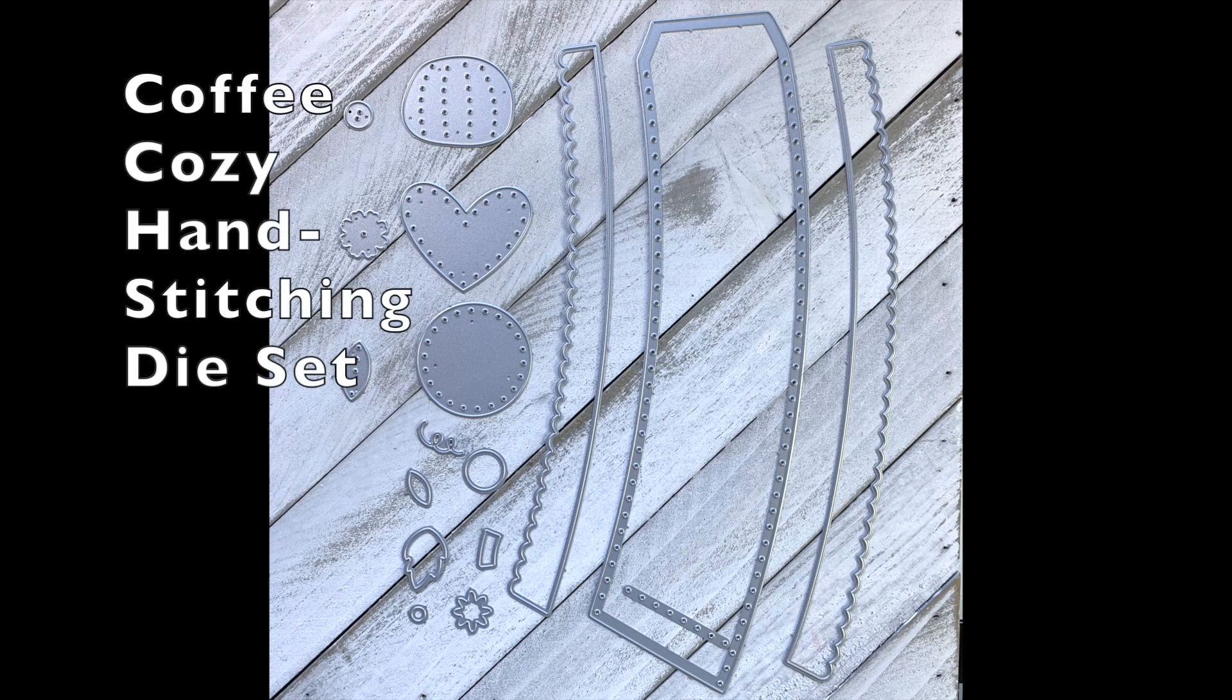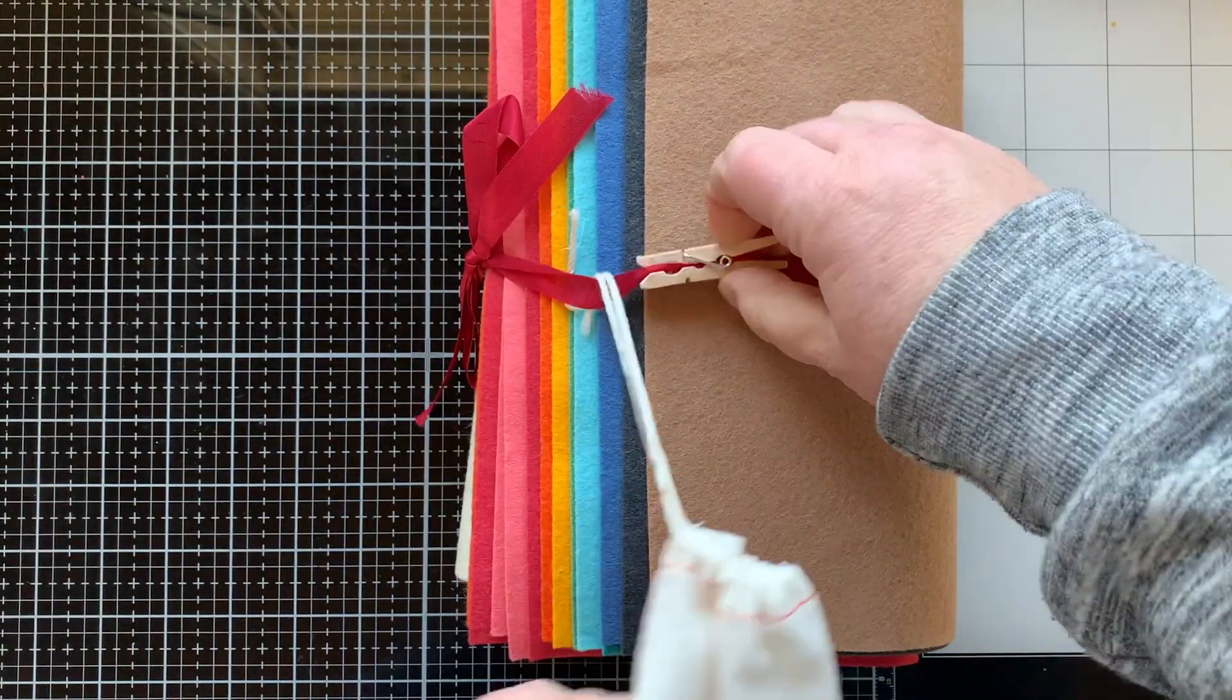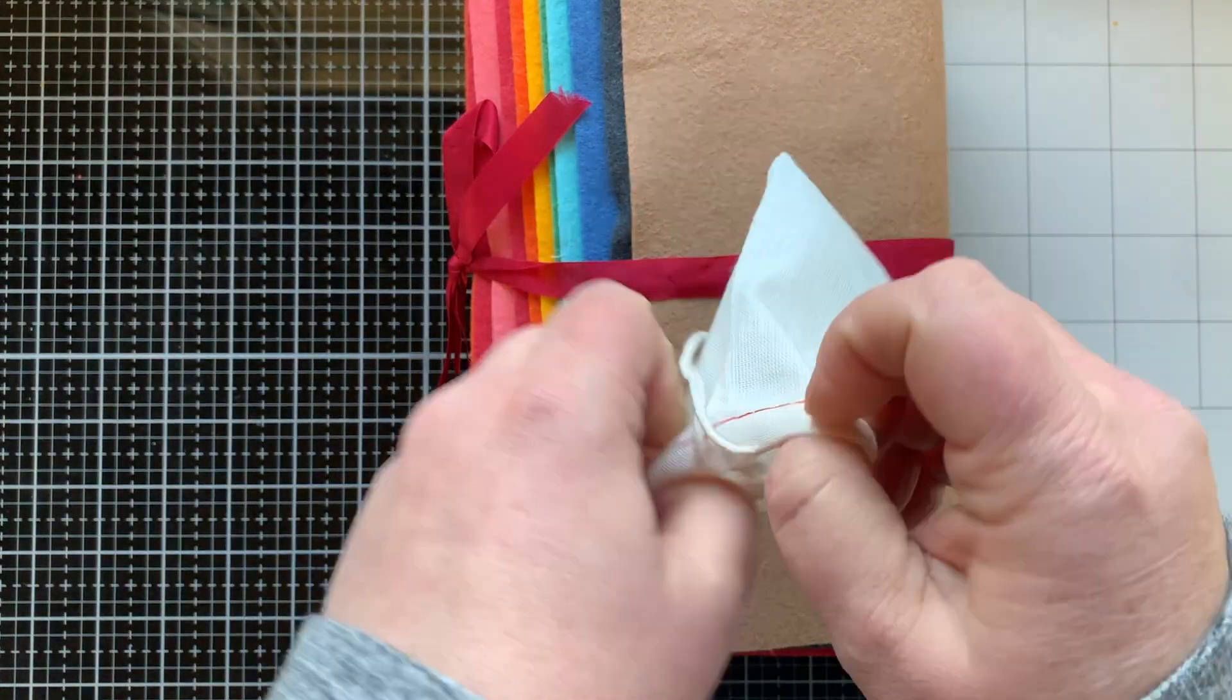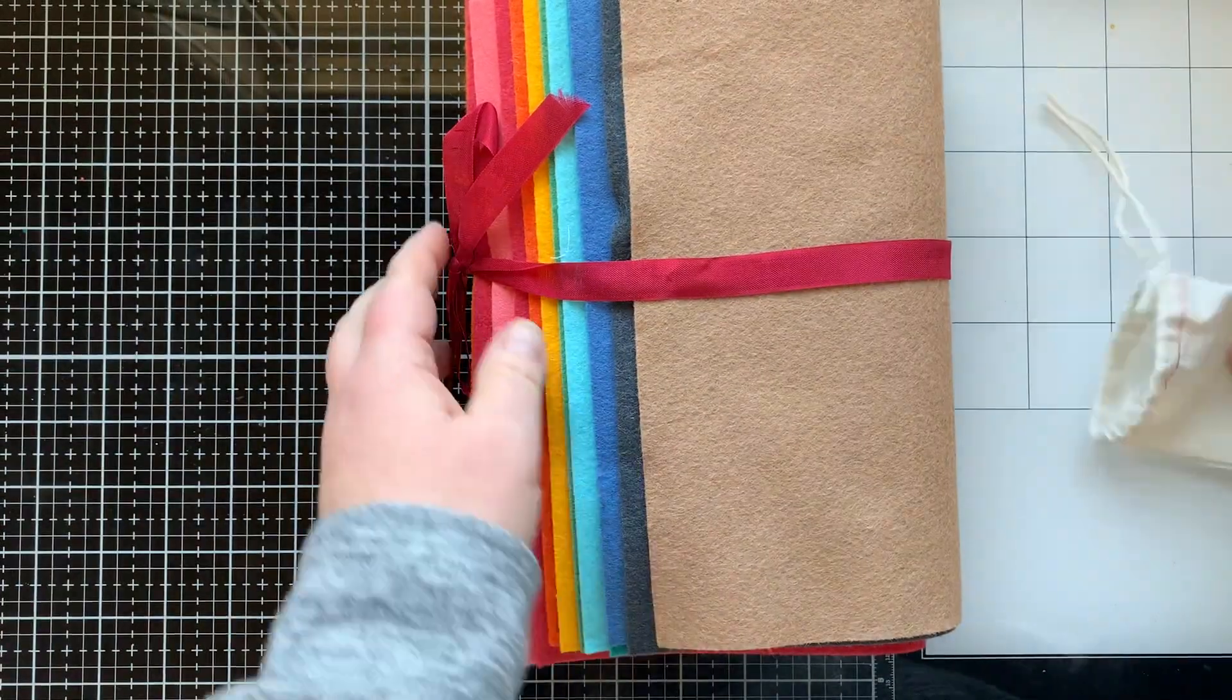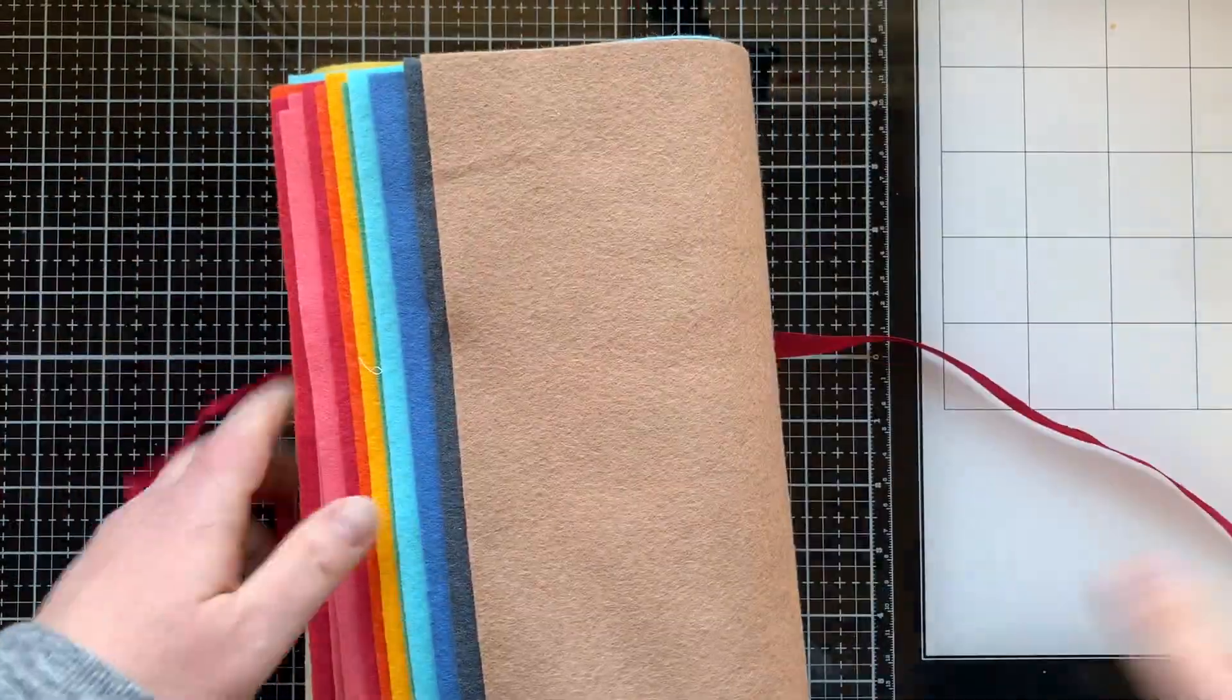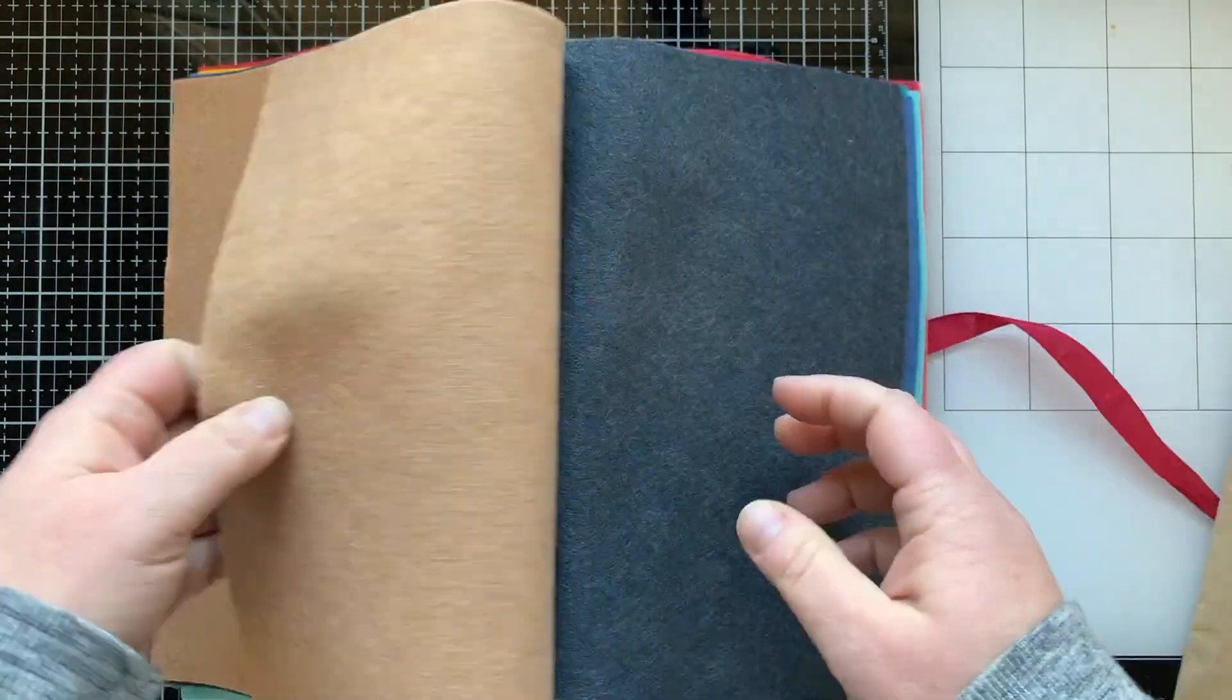I will be focusing on the Coffee Cozy hand stitching die set to make a felt coffee cup cozy. I am also using amazing felt by Benzie Designs who has collaborated with Trinity Stamps to bring you a collection of felt specifically designed for Trinity Stamps with these amazing colors.